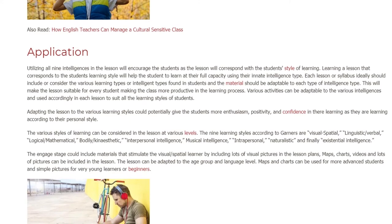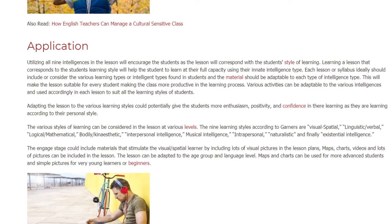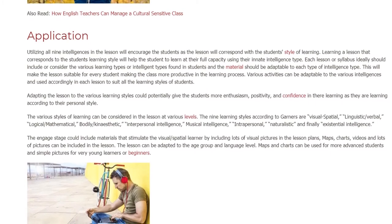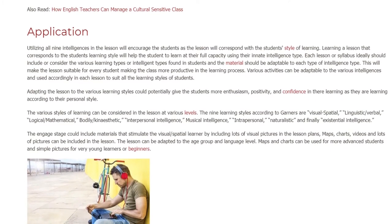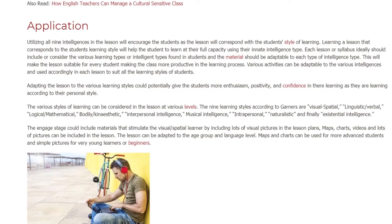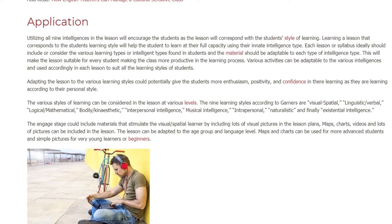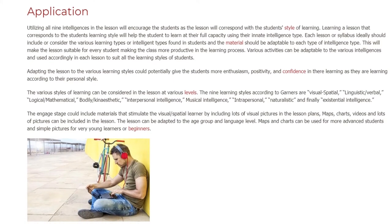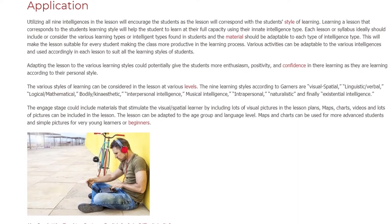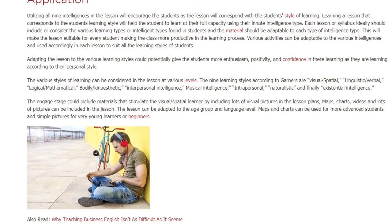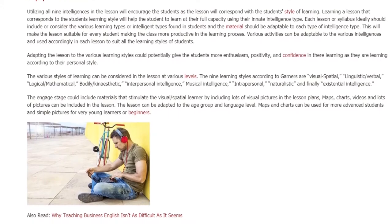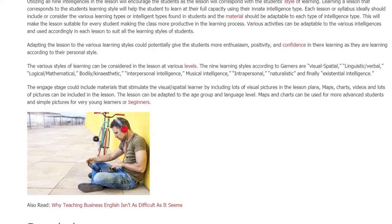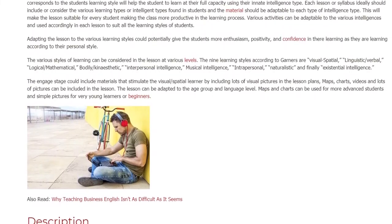The nine learning styles according to Gardner are: visual-spatial, linguistic-verbal, logical-mathematical, bodily-kinesthetic, interpersonal intelligence, musical intelligence, intrapersonal, naturalistic, and finally existential intelligence. The engaged stage could include materials that stimulate the visual-spatial learner by including lots of visual pictures in the lesson plans. Maps, charts, videos, and lots of pictures can be included in the lesson.